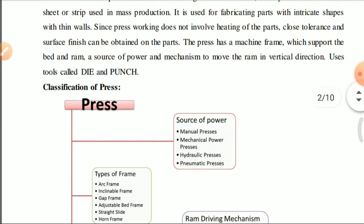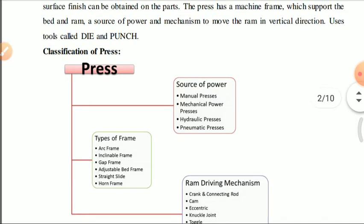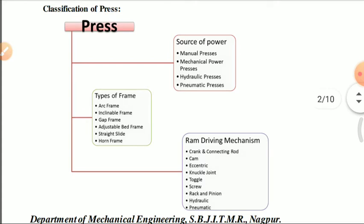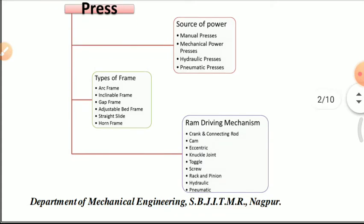Classification of presses: presses are mainly categorized under three classifications. The first is by source of power, which includes manual press, mechanical power press, hydraulic press, and pneumatic press.